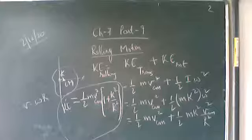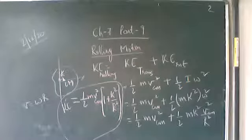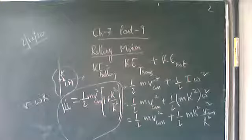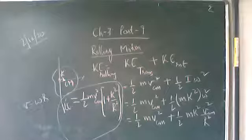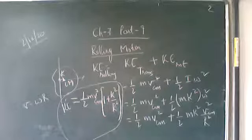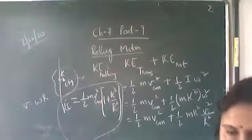Next, we will derive the expression for the acceleration of a solid cylinder rolling down an inclined plane without slipping. Previously in laws of motion we found the acceleration of a block sliding down an inclined plane — that was purely translational motion. Here, a rigid body rolling down an inclined plane will have both translational motion and rotational motion.